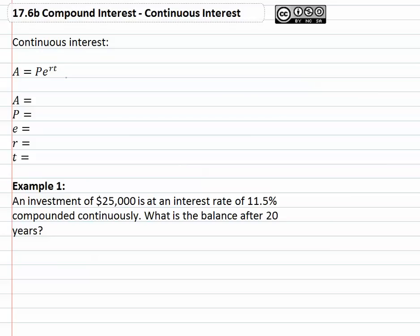In fact, the more you compound, the more money that will be added to the account. And so the interesting question is, well what if we kept compounding more and more often? Well that's where we come up with continuous interest, which really is infinite compounds per year.